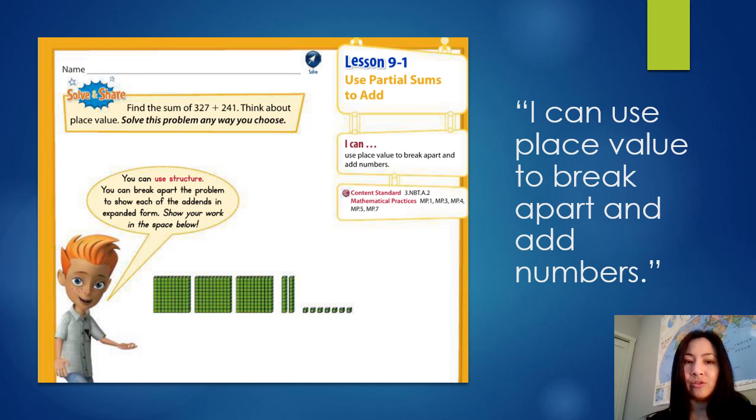So you're going to turn to Solve and Share page. I'm going to flip back now to page 475. So this is still in your volume two workbook, the one we've been using. Got to flip back. And the big idea is that you are going to use place value to break apart numbers into their different place values and then add the numbers back together. So the Solve and Share says find the sum of 327 plus 241. Think about place value. So it does say solve this problem any way you choose. So for some of you that might be using the standard algorithm, but I'd really like to encourage you to think about breaking apart the problem.